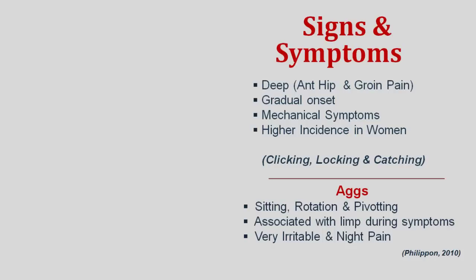The clinical signs and symptoms: the typical presentation is deep or sharp pain in the groin region. Most patients don't pinpoint a specific event. Labral tears can have mechanical symptoms such as clicking, locking, and catching. The most sensitive indicator is clicking associated with pain. Generally, labral tears have a higher incidence in women.